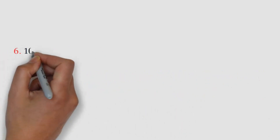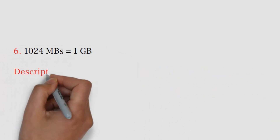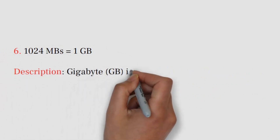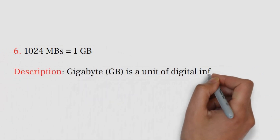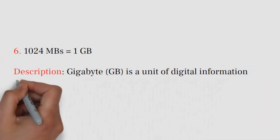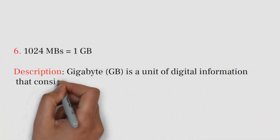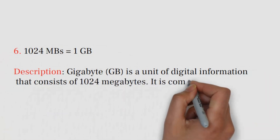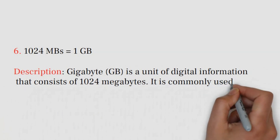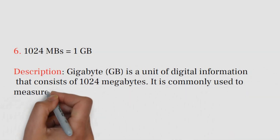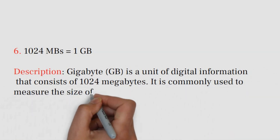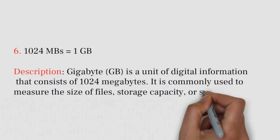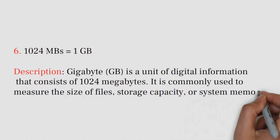Number 6: 1024 MBs equals 1 gigabyte. Gigabyte (GB) is a unit of digital information that consists of 1024 megabytes. It is commonly used to measure the size of files, storage capacity, or system memory.